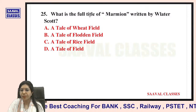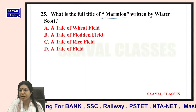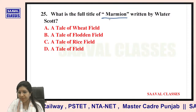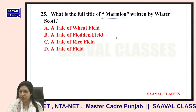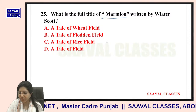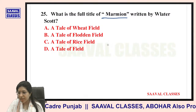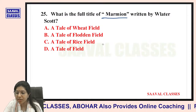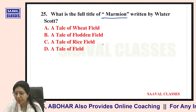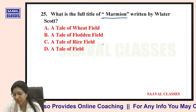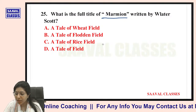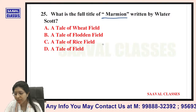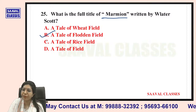Question number twenty-five: What is the full title of Marmion written by Walter Scott? Options are A Tale of Wheatfield, A Tale of Flood and Field, A Tale of Rice Field, or A Tale of Field. The answer is A Tale of Flood and Field.